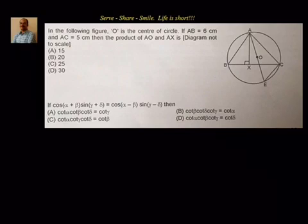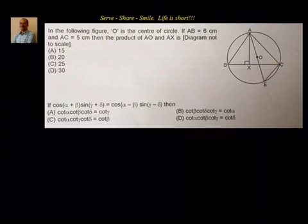Let us understand this. We have been given that in the following figure, O is the centre of the circle, AB is 6 centimetres, AC is 5 centimetres. Then find out what is the product of AO — that's the radius — into AX.